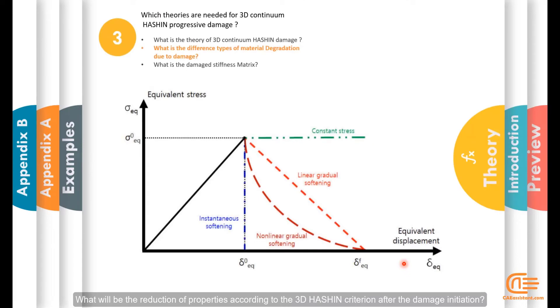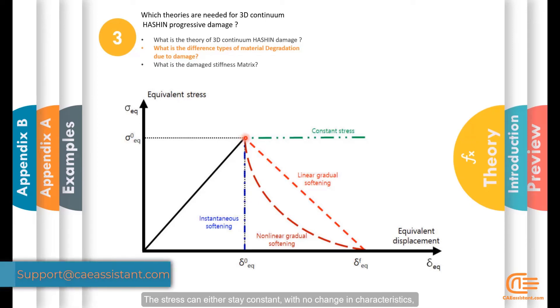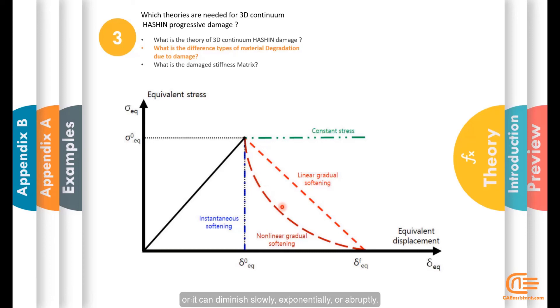What will be the reduction of properties according to the 3D Hashin criterion after the damage initiation? The stress can either stay constant with no change in characteristics or it can diminish slowly, exponentially or abruptly.